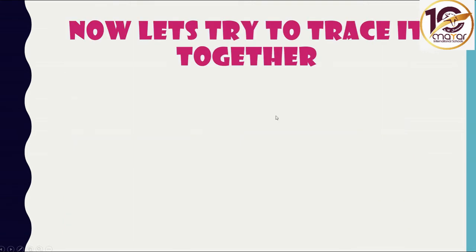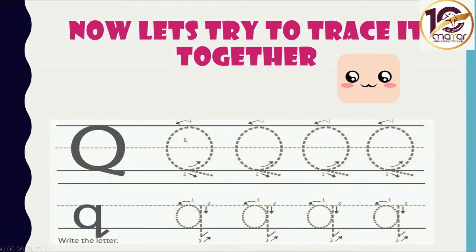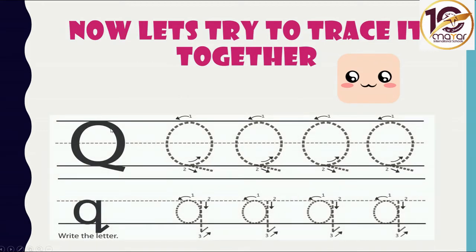Now, let's try to trace letter Q together. As we said, letter Q is a circle with a stick inside. And the small q is half circle, up and down — don't forget the tail.